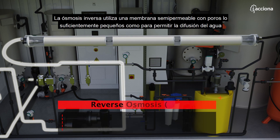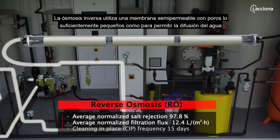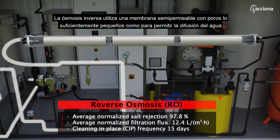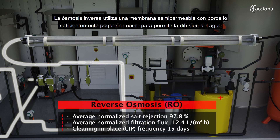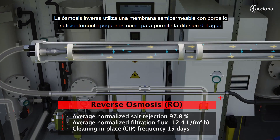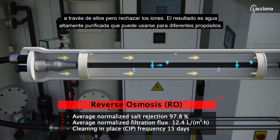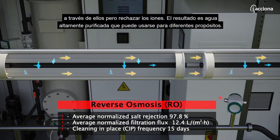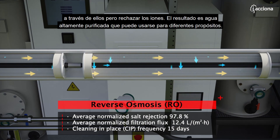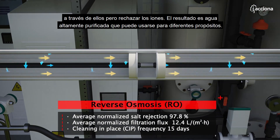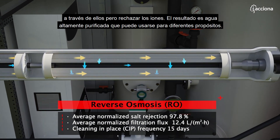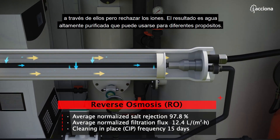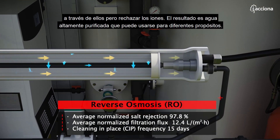Reverse osmosis uses a semi-permeable thin membrane with pores small enough to allow water to diffuse through while rejecting ions. The result is highly purified water able to be used for different purposes.